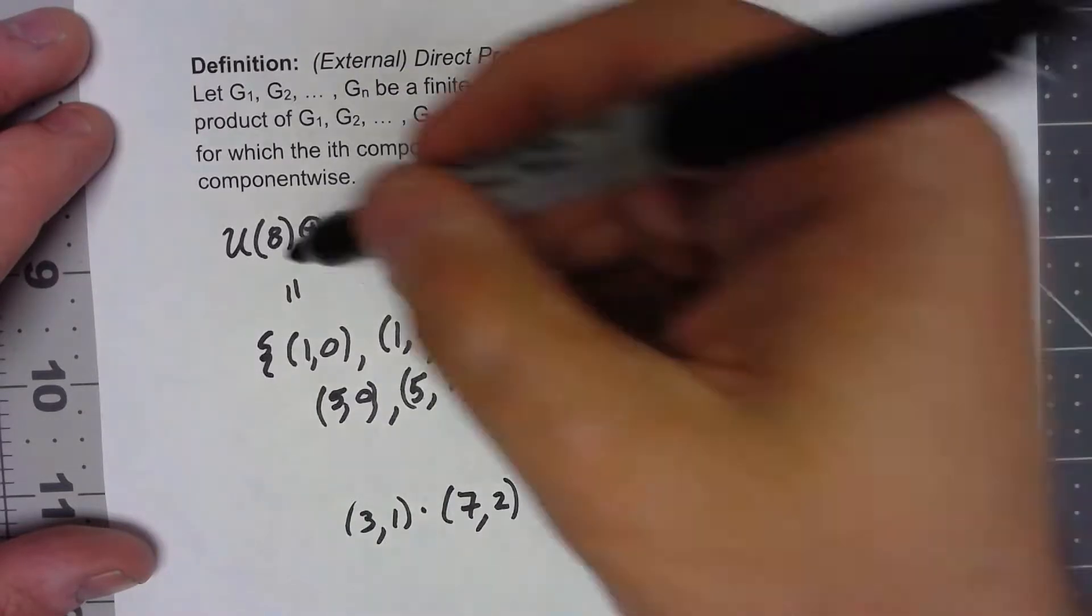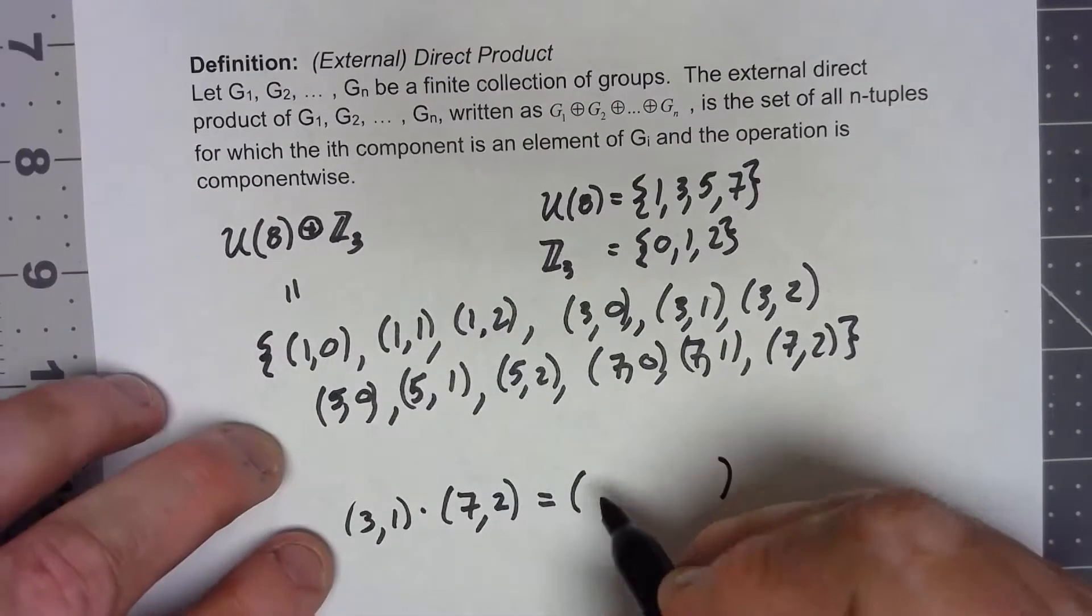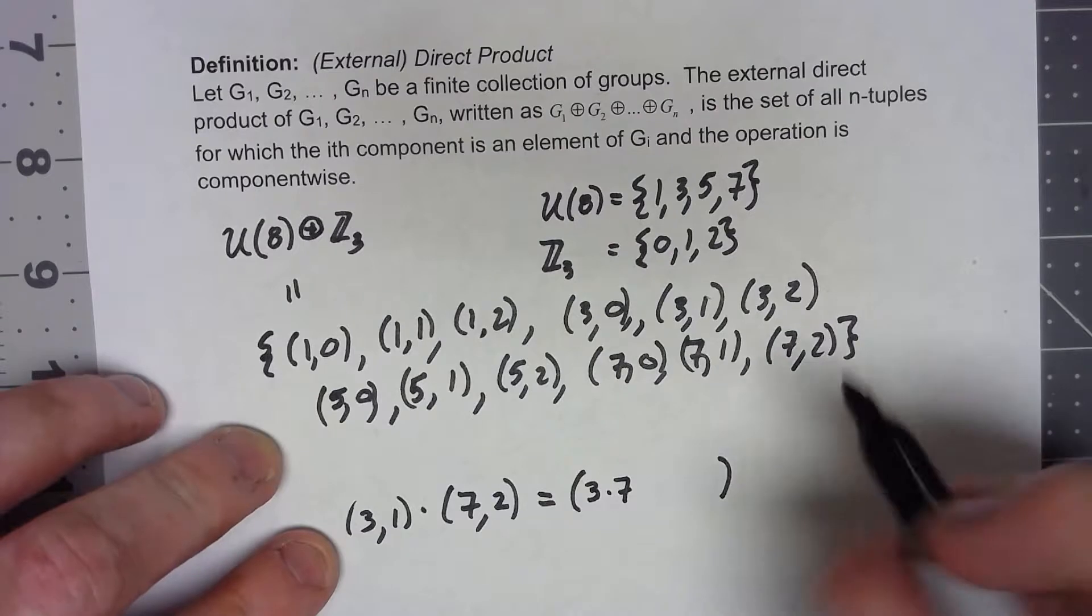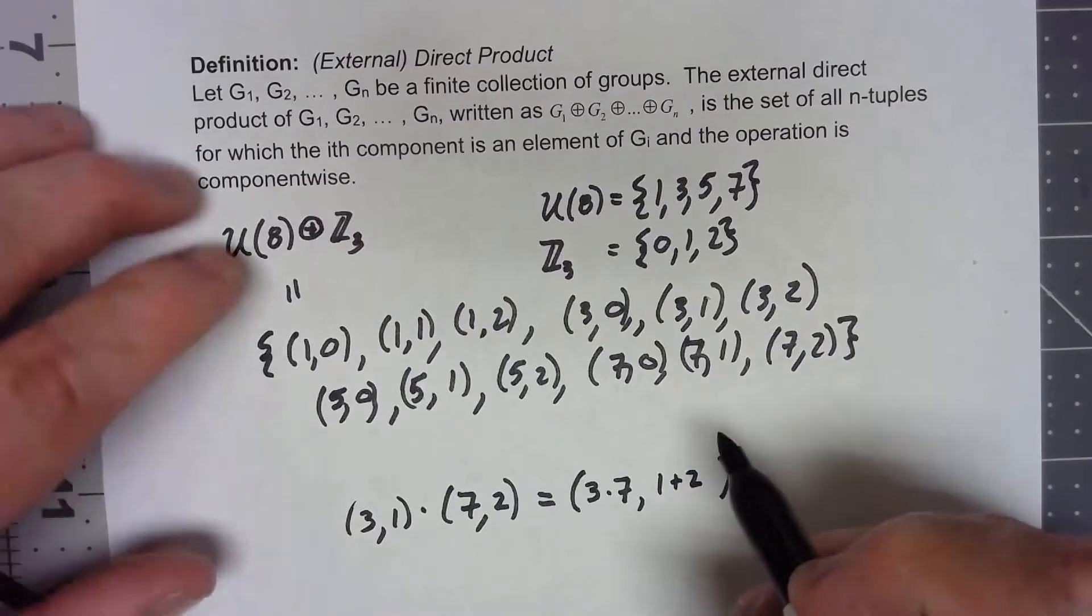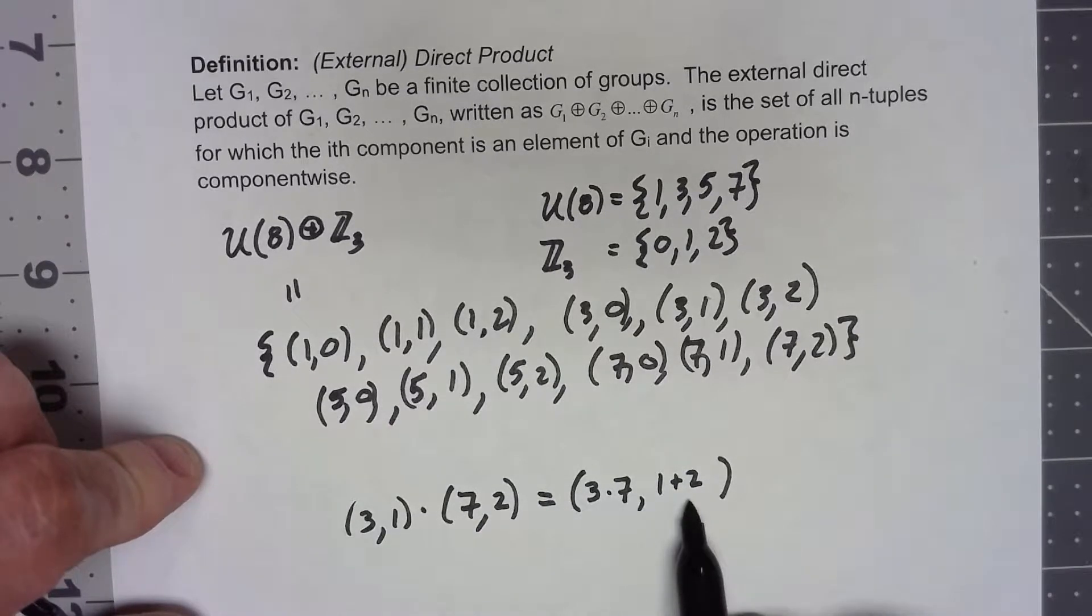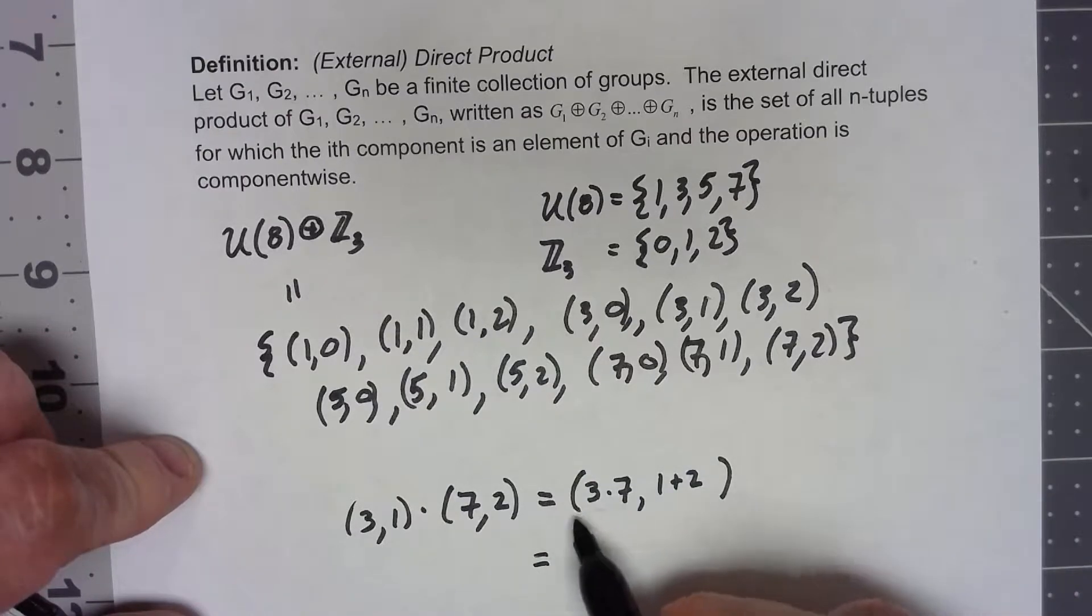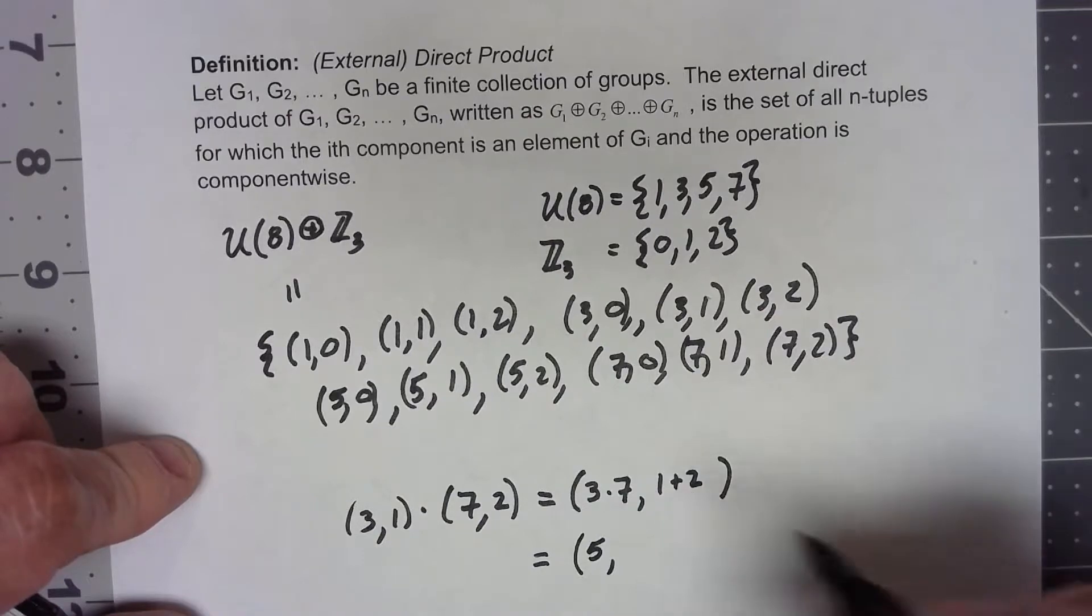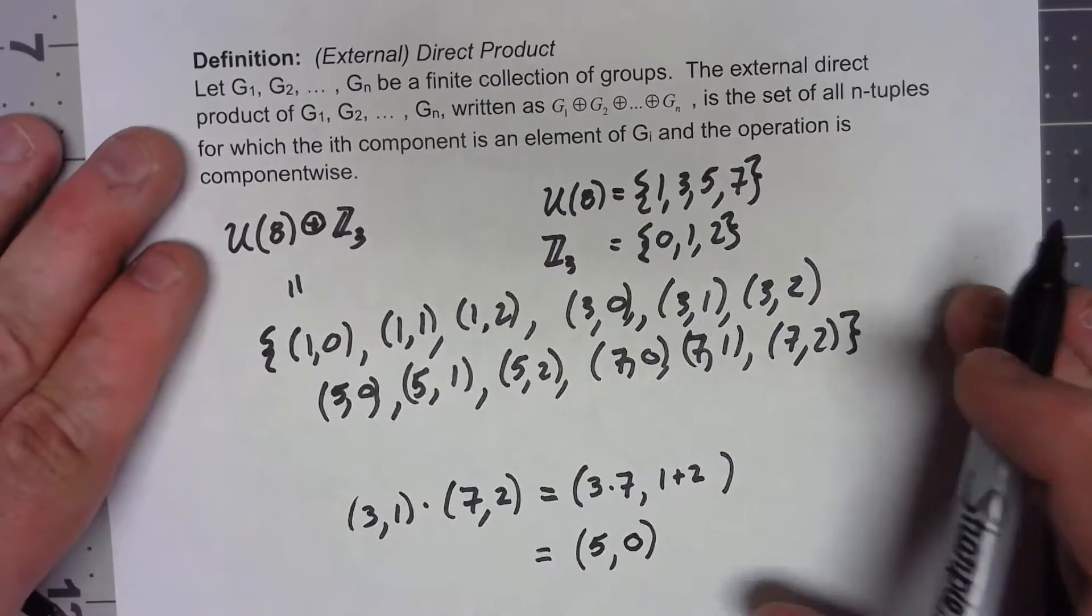So what we're going to do is we're going to get an ordered pair, and that ordered pair is going to come from the operations of the separate groups. So I'm going to do 3 times 7 using the operation of U(8), and I'm going to do 1 plus 2 using the operation of Z3. I'm going to specifically use times for U(8) and plus for Z3 because those are the standard way we write those operations. So 3 times 7 is 21, and in U(8) that's 5. 1 plus 2 is 3, and in Z3 that's 0.